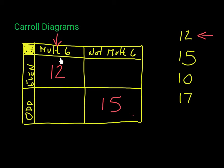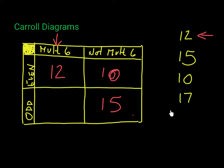Now 10: is it a multiple of six? No, so it goes in one of these two boxes. Is it even or odd? It's even. So 10 goes in this box here. Our last number is 17. It's not a multiple of six since it doesn't appear on the six times table, and 7 is not even, so 17 is odd. It goes in this box with the 15. Notice we now have a completely empty box — that's perfectly okay if you've placed the right numbers in the right boxes.